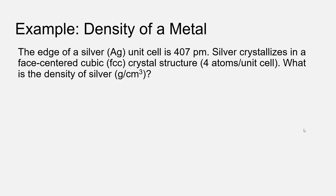We can do this for any unit cell, particularly for the density of ionic compounds as well, but the more complex the unit cell, the more difficult it is to establish the number of atoms per unit volume. So in this case, we're going to take a look at an example where we calculate the density of silver based on the dimensions of the unit cell.